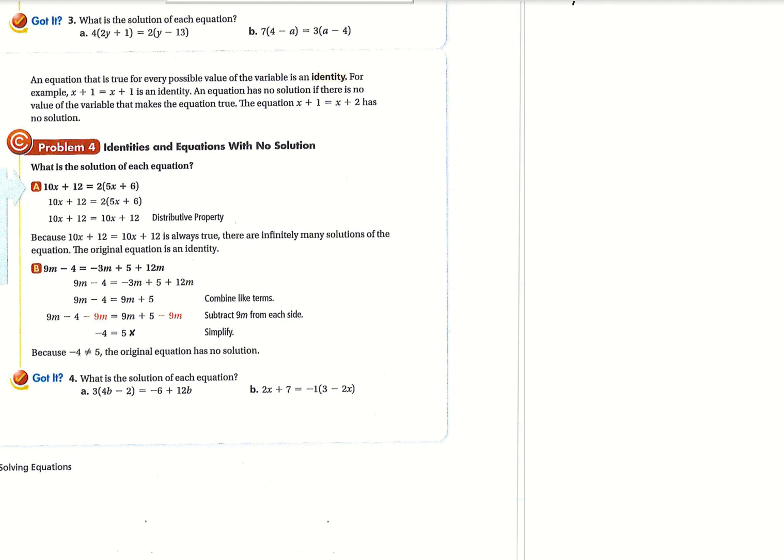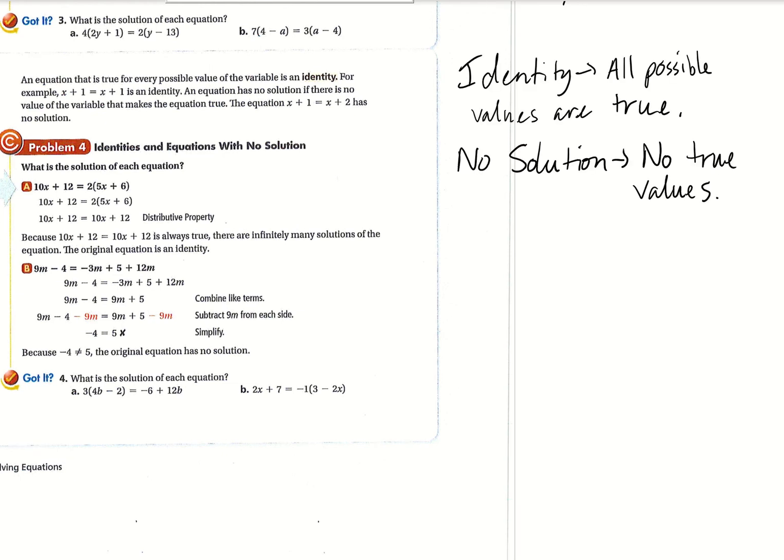All right. So an equation is true for every possible value of the variable is an identity. I said that really weird, but basically what an identity is, is any solution is true. And I wrote that over here on the right just a second ago. So for an identity, all possible values are true.